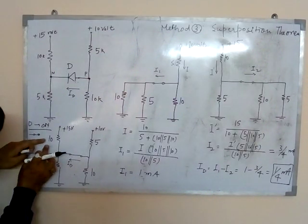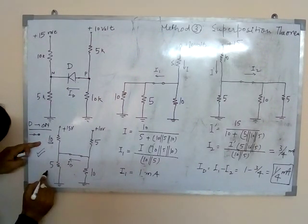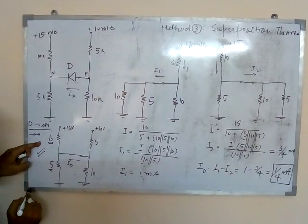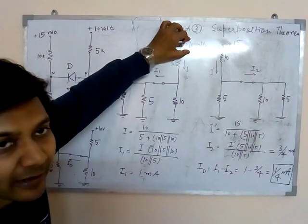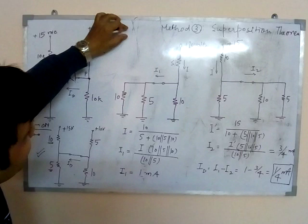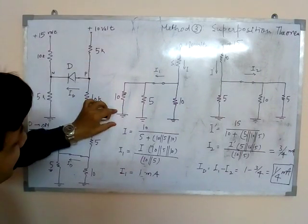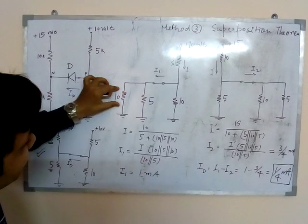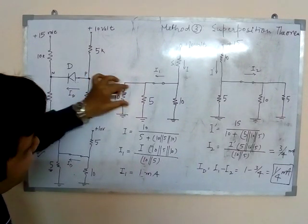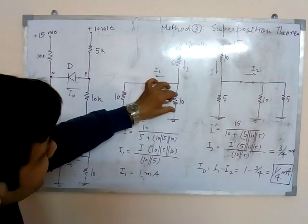So if it was 0, then this 10 kilo ohm will come parallel with the 5 kilo ohm. And the circuit I have drawn here. See, this is 10V applied. But what about the 15V? 15V has a ground. So because of that ground, this 10K has already come parallel with 5K. So all three resistors are in parallel.